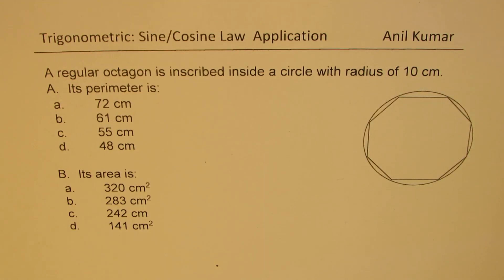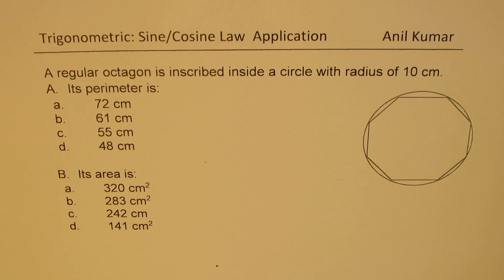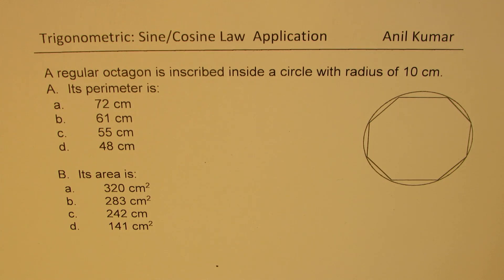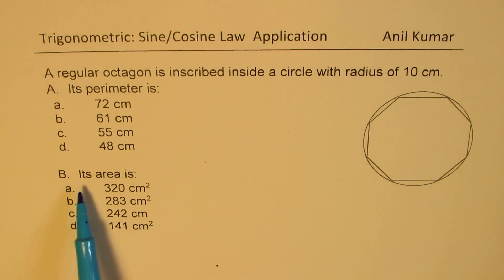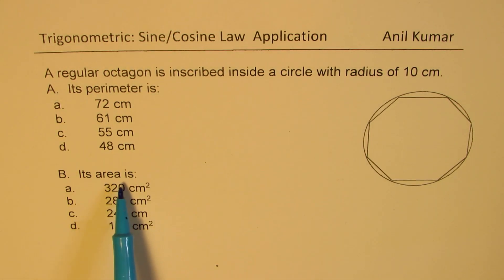I'm Manil Kumar. Welcome to my series on trigonometry. Here is a very important test question. Let us see how to solve it. A regular octagon is inscribed inside a circle with radius of 10 centimeters. It has two parts: Part A is to find its perimeter, and Part B is to find its area.